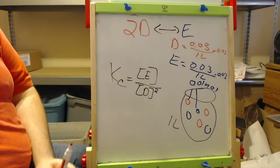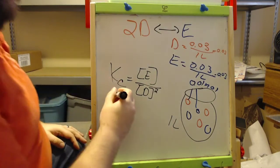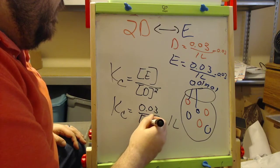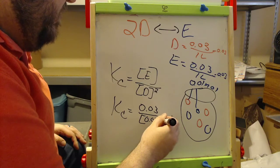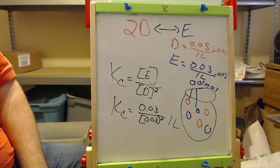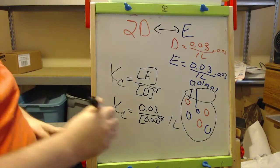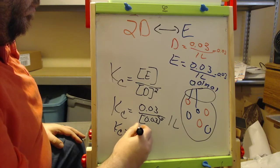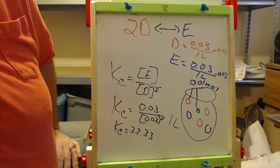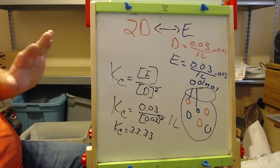Then we come down to our KC and plug in the values. We have 0.03 over 0.03 squared, so KC is basically 1 over 0.03, giving us 33.33. That's what our KC should be.